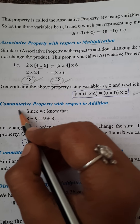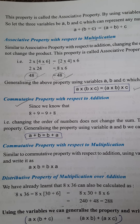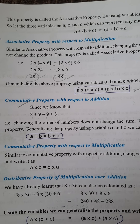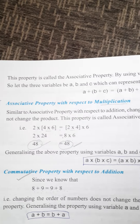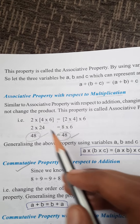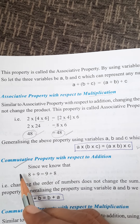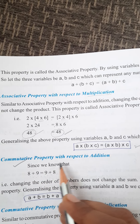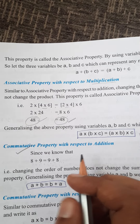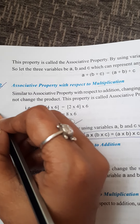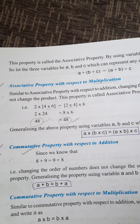So that is the commutative property with respect to addition. Today we took two properties: associative property with multiplication and commutative property with addition. In your homework, you have to write both properties with examples.